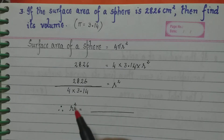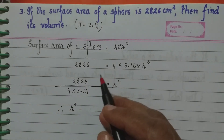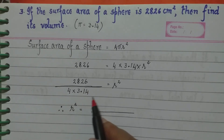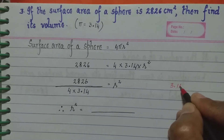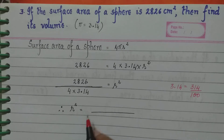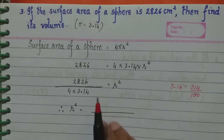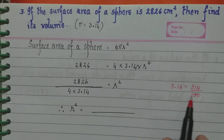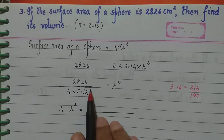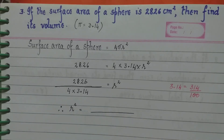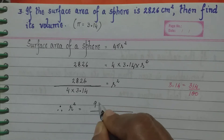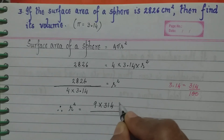Now when we simplify this further, we have 3.14, and as we have done earlier, we try to make 3.14 as a fraction. We know that 3.14 is 314 upon 100. You will simplify by yourselves — writing 314 upon 100 and then simplifying to find r². When we simplify, we will reach a point where r² equals 9 into 314 into 100.